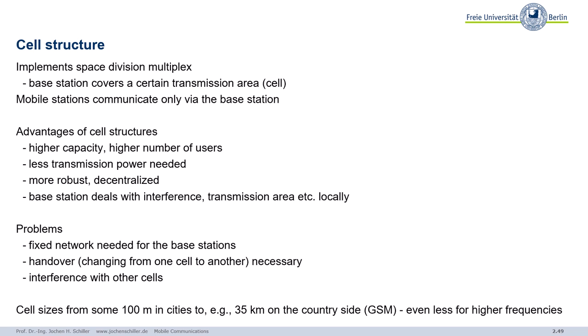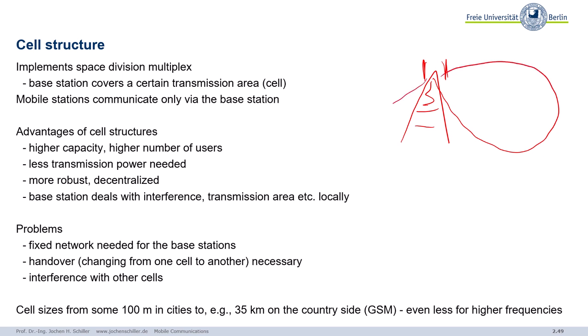Some words on the basic structure of cellular mobile telephone networks. We call them cellular networks because the underlying structure of such huge networks are cells. Cells implement space division multiplexing. The basic idea of a cell is a base station with certain antennas — think of beamforming — that creates a cell or sectors, covering a certain transmission area. Mobile stations communicate only with the base station within a certain cell.